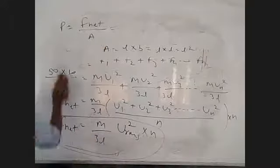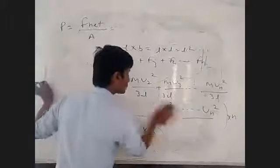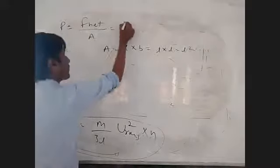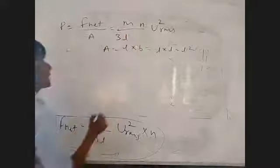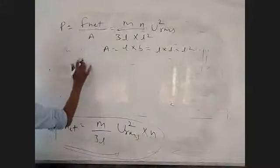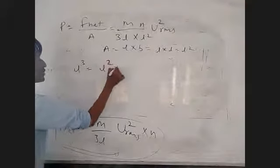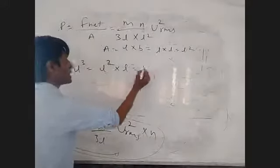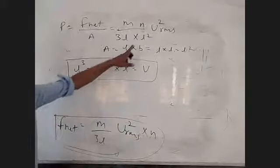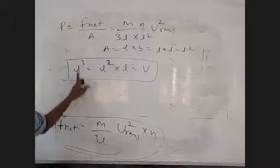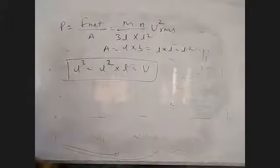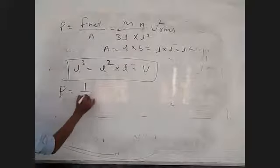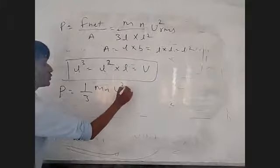Now this value is on top, and area means L squared below. What do you think about L squared? M upon 3L, M into N, U_rms squared — and this divided by L squared. Now see: L cube means L squared into L. And what can we call L cube? Volume also. L cube is equal to volume. So L squared into L means L cube, and L cube is equal to volume. So I can write volume here. Finally, P is equal to one-third, M N, U_rms squared upon V.